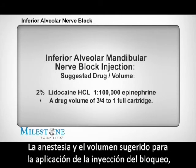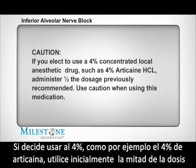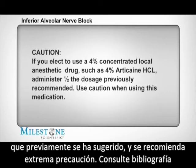The suggested drug and volume to perform the inferior alveolar nerve block injection is 2% lidocaine HCL with 1 to 100,000 epinephrine. A drug volume of three quarters to one full cartridge is suggested. If you elect to use a 4% concentrated local anesthetic drug, such as 4% articaine HCL, use one half the dosage previously suggested and use caution when using these medications.